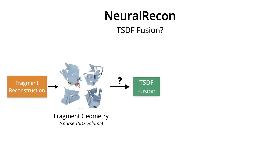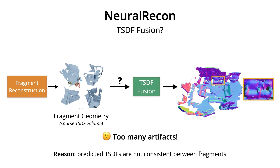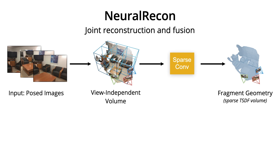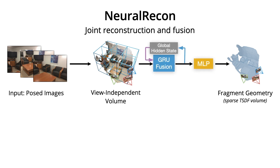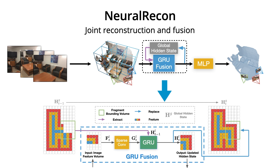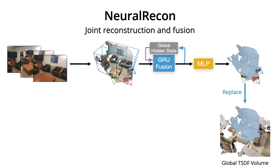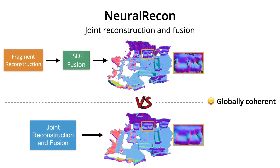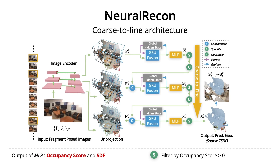After the fragment geometry is reconstructed, we could use a standard TSDF fusion to fuse these fragments into the global TSDF volume. But we found that directly fusing these fragments leads to reconstruction with too many artifacts, since the predicted TSDFs are still not consistent between fragments. Based on these observations, we further propose the major contribution of this work, which is a joint reconstruction and fusion pipeline of fragment TSDFs. We substitute the previous standard sparse convolution with a gated recurrent unit and use an MLP to predict the fragment geometry. The GRU fusion module maintains a hidden state feature volume that contains the history information of previously reconstructed fragments. Since the fusion operation is carried out in GRU fusion, the predicted fragment TSDF can be integrated into the global TSDF volume by directly replacing the corresponding voxel. The joint reconstruction fusion serves as a learning-based fusion that can produce globally coherent geometry compared to the standard TSDF fusion with its running average. We use a three-level coarse-to-fine structure to gradually refine the predicted TSDFs, and we refer the viewers to the paper for further details.